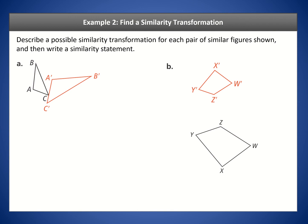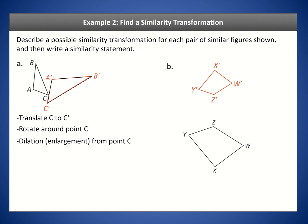Let's look at an example: describe a possible similarity transformation for each pair of similar figures and write a similarity statement. For the triangle on the left, we translate so that C lines up with C', then rotate the triangle around point C or C', then perform an enlargement dilation from point C. So the similarity transformation involves a translation from C to C', followed by a rotation about point C, followed by a dilation with scale factor greater than one from point C.